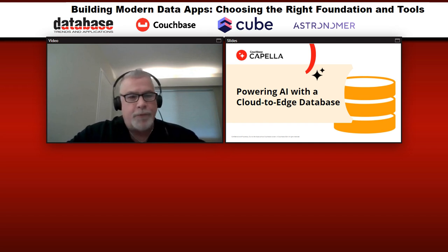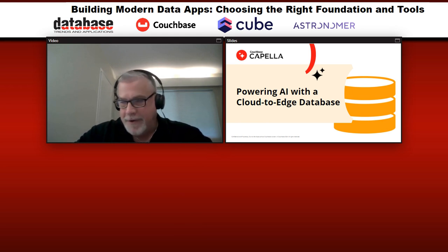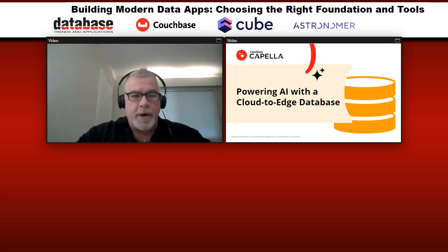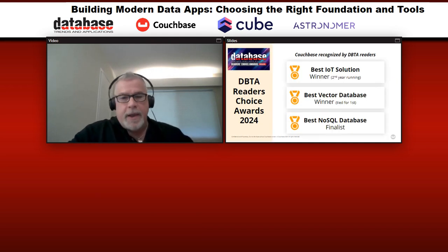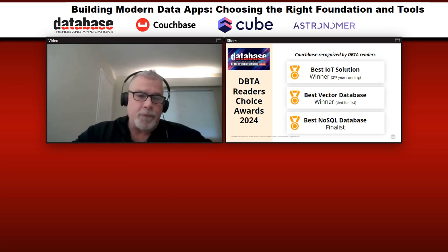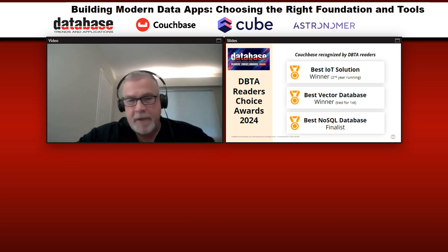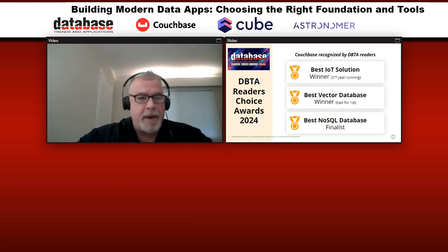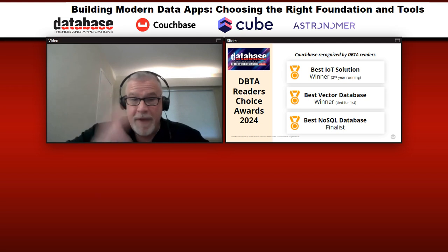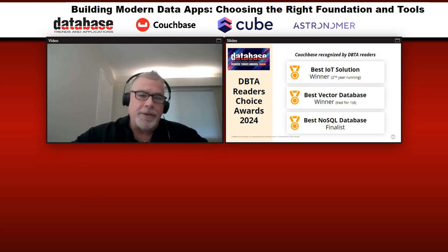As a database vendor on the panel, I'll focus on operational data and processing in the context of AI-powered apps that run from cloud to edge. But first, I'd like to turn to some accolades for Couchbase. We're honored to have been voted tops in three database categories in this year's DBTA Reader's Choice Awards. We're recognized as best IoT solution for the second year in a row, we tied for best vector database, and we were finalists for best NoSQL database.